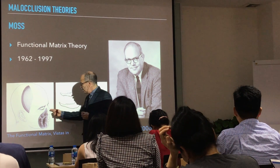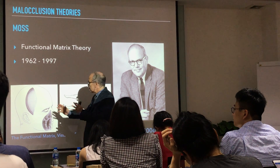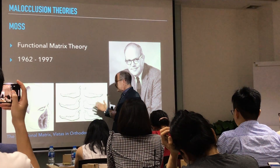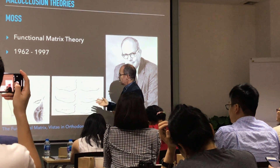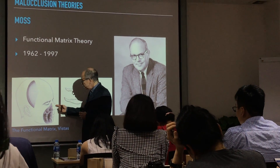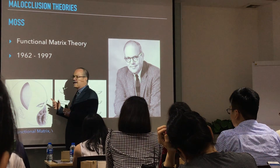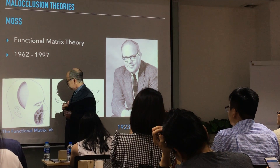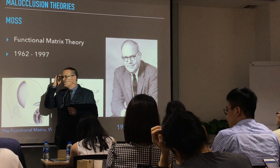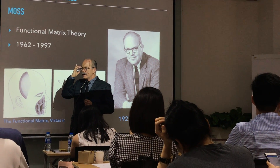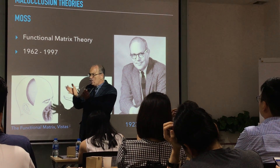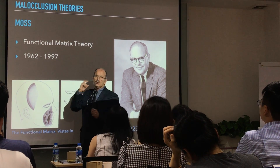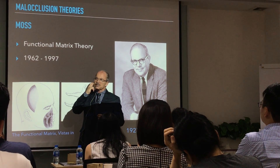This theory can explain the patterns that are hyper-divergent. It can explain a few things. In the literature we have some scientific evidence with some experiments — for example, in macaques and monkeys, they put some kind of blockage in the airway and these monkeys developed open bites and different kinds of malocclusion.